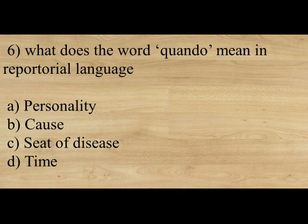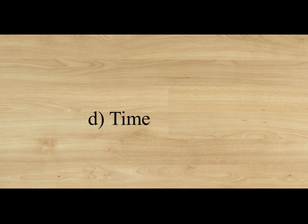What does the word KONDO mean in repertorial language? Option A: Personality. Option B: Course. Option C: Seat of disease. Option D: Time. KONDO means Option D, Time. Boenninghausen gave 7 points in order to complete the image of the disease. Remember these 7 points: KUS, KUD, KUBI, CUBUS OXILLUS, KUR, KUMADO, KUONDO.